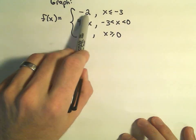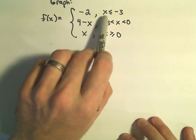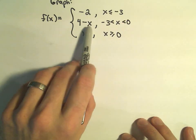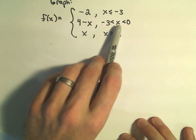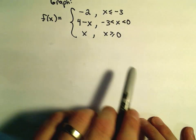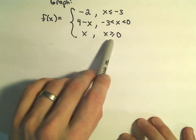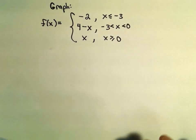It looks like the line y equals negative 2 if x is less than or equal to negative 3. Looks like 4 minus x for x values in between negative 3 and 0, not including either. And it looks like the line y equals x if x is greater than or equal to 0.